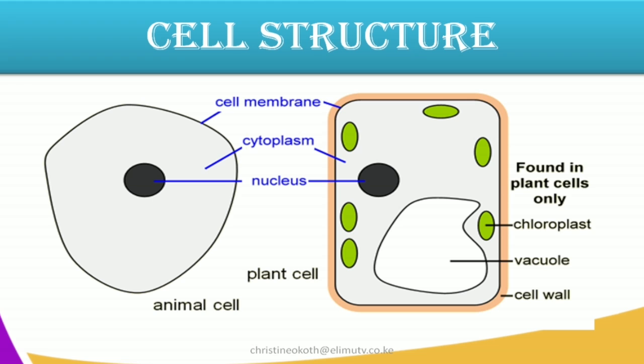The vacuole is very visible in the plant cell. In the animal cell it is there but they are very small and scattered all over. Then an additional thing that the plant cell has is what we call a cell wall — this is the outermost membrane. We're going to look at some of the functions of the cell wall in a plant cell.